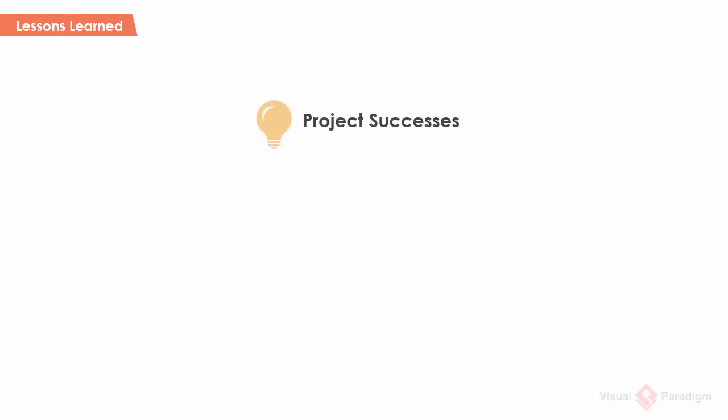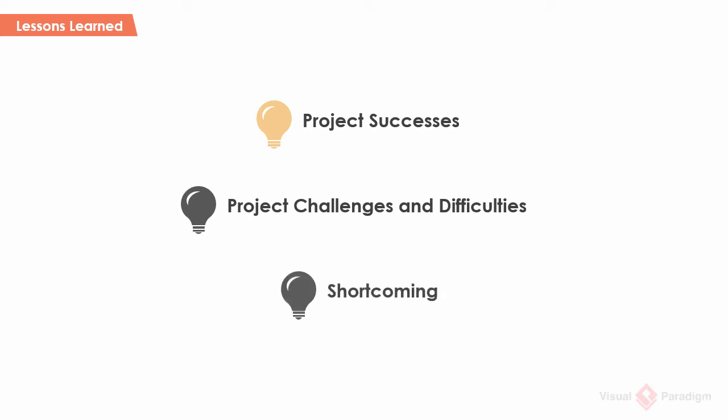A typical lessons learned document consists of three parts: project successes, which are the key successes of the project; project challenges and difficulties, which are the difficulties faced during the project lifecycle; and shortcomings, which are the tasks and decisions performed and made wrongly. Let's take a look at some examples for each of them.